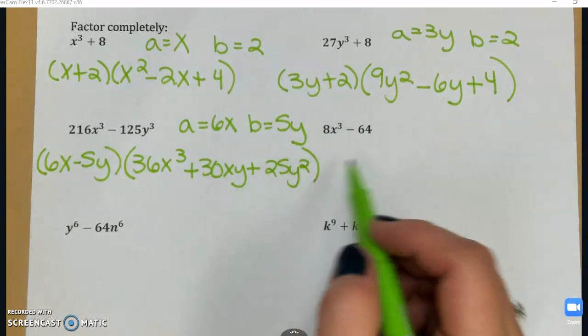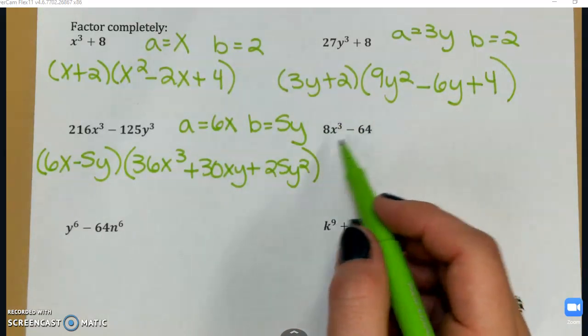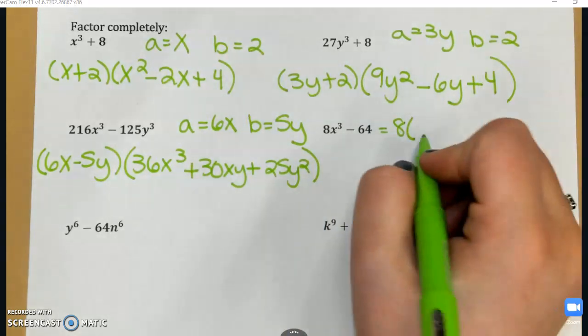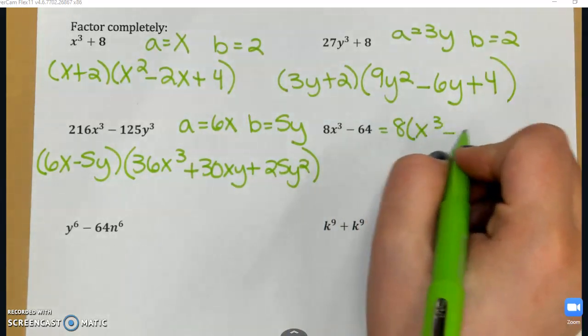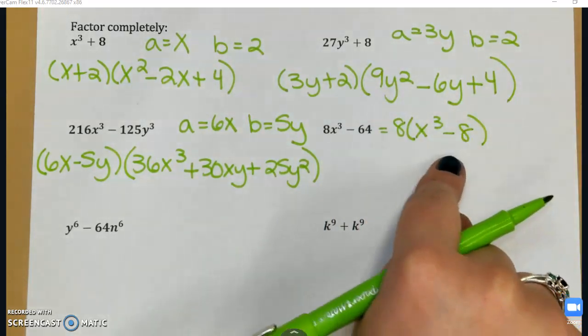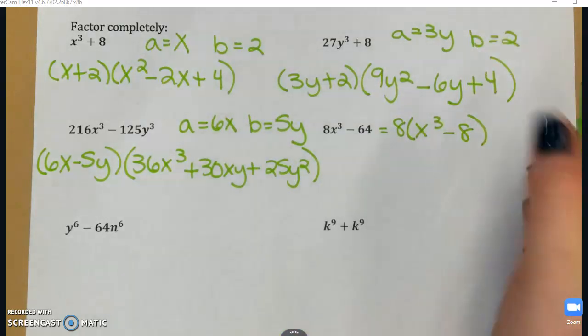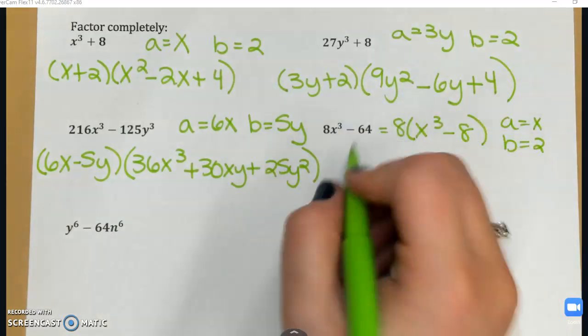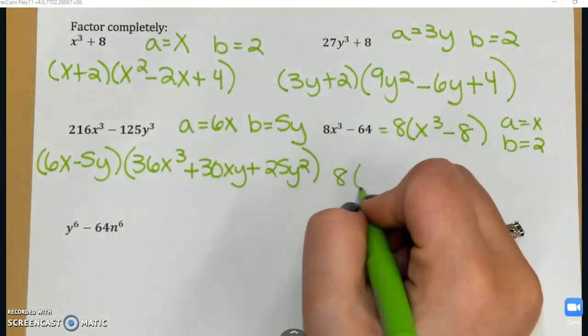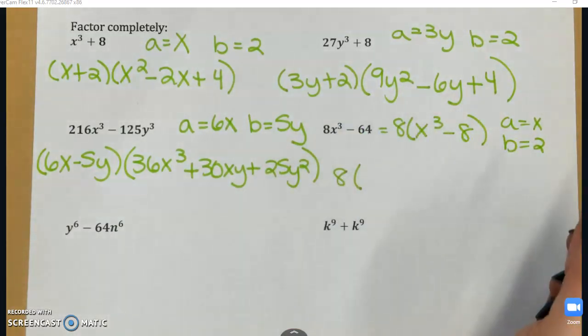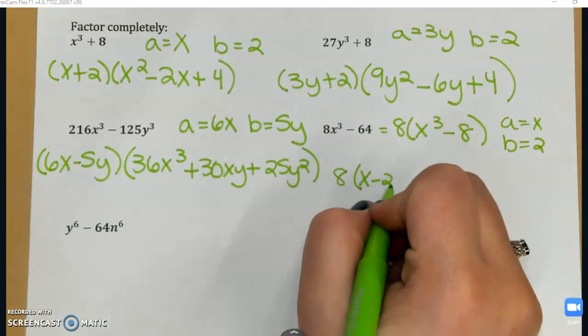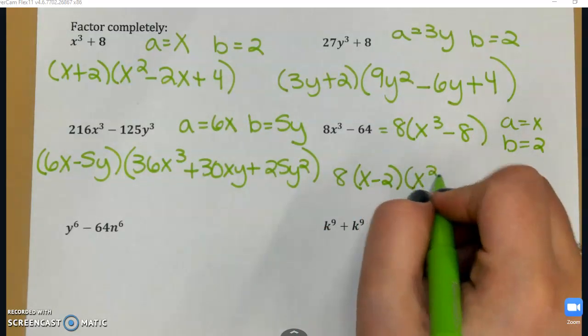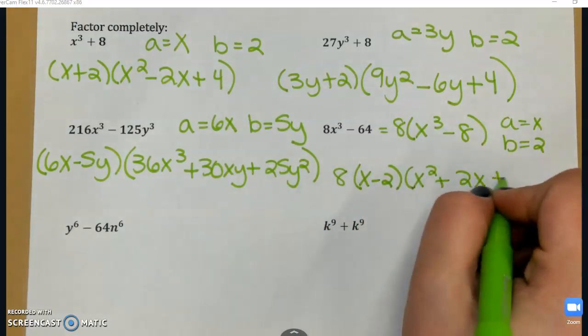All right, on to the next one. I have a GCF here that I can take out, and that is 8. If I factor out 8, that gives me x³ - 8. And this is a difference of cubes. So a is x, b is 2. So that 8 is going to stay in the front, and then I'm going to do my difference of cubes, which is 8(x - 2)(x² + 2x + 4).